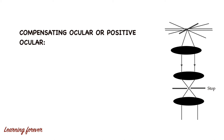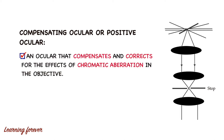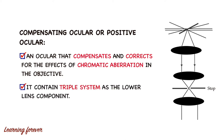The third type is the compensating ocular, also called a positive ocular. This ocular compensates and corrects for the effect of chromatic aberration in the objective. Chromatic aberration is the failure of a lens to focus all colors to the same point. The earlier two systems — Ramsden and Huygenian — are unable to correct for chromatic aberration. Therefore, in the compensating ocular, one more lens has been added, giving it a triple lens system as the lower lens component.